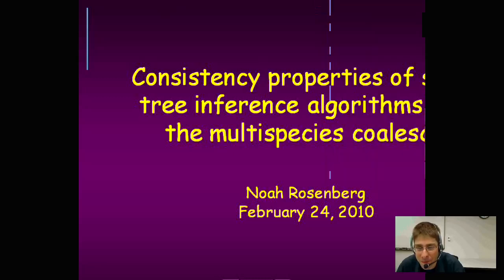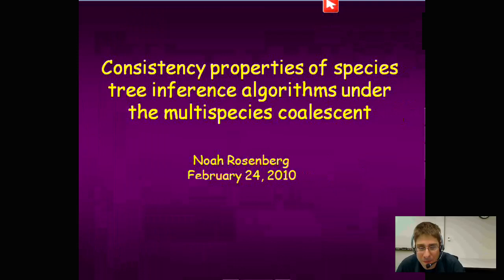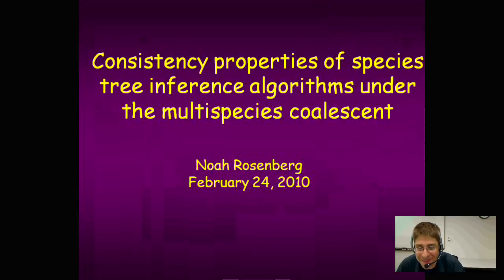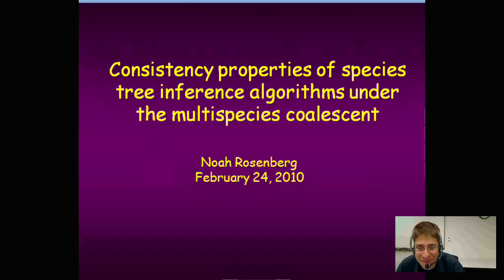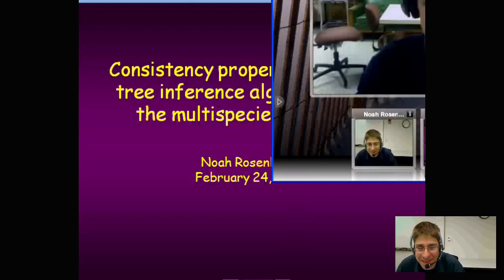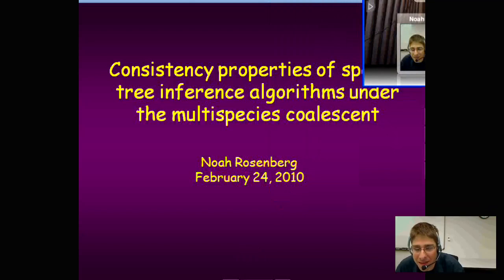Our speaker today is Noah Rosenberg, an associate professor at the University of Michigan. Noah started out doing a PhD in pure math and got distracted by biology, completing a PhD with Marcus Feldman, and then did a postdoc at the University of Southern California. His research spans a broad range from proving theorems about evolutionary models to quite applied data-driven work on the inference of human evolutionary history. He'll give a talk entitled Consistency Properties of Species Tree Inference Algorithms Under the Multi-Species Coalescent.